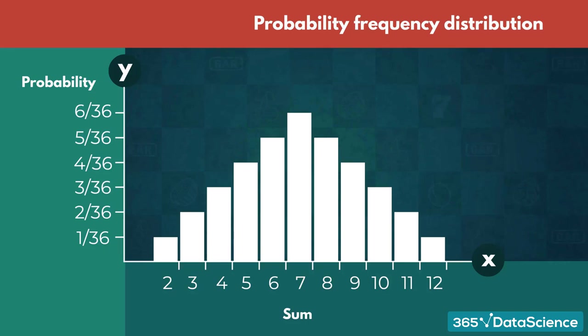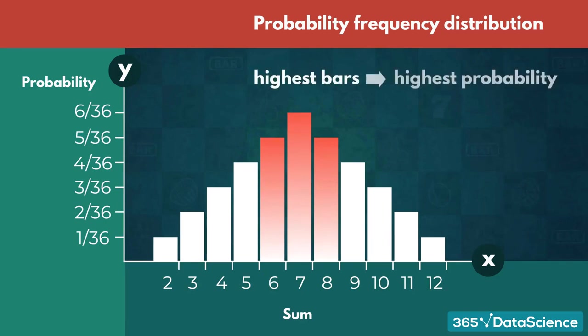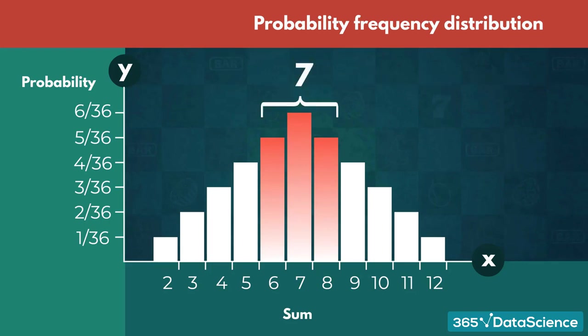On the graph we see the probability frequency distribution. The x-axis depicts the sum of the two dice, and the y-axis represents the probability of getting each outcome. When making predictions, we generally want our interval to have the highest probability. The individual outcomes with the highest probability are the ones with the highest bars in the graph. Usually, the highest bars will form around the expected value. Thus, the values around it would also be the values with the highest probability, suggesting we should construct our interval around the expected value.